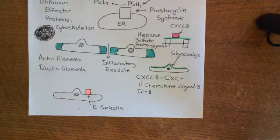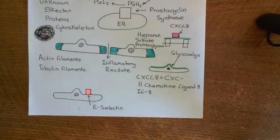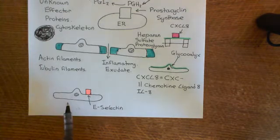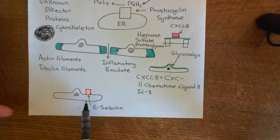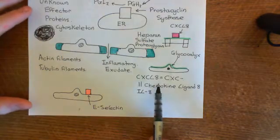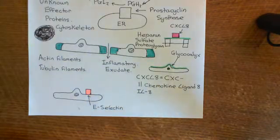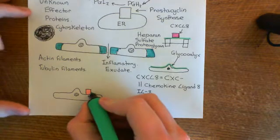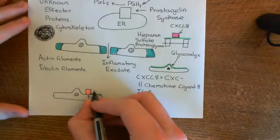Welcome to this next video in which we are discussing the acute inflammatory response and anti-inflammatory drugs. We're in the process of discussing type 2 activation of endothelial cells. Endothelial cells that have undergone type 2 activation will start expressing on their surface E-selectin molecules and also CXCL8 chemokine molecules. These are the two new things that are going to be expressed on these endothelial cells and they are going to help with neutrophil extravasation.